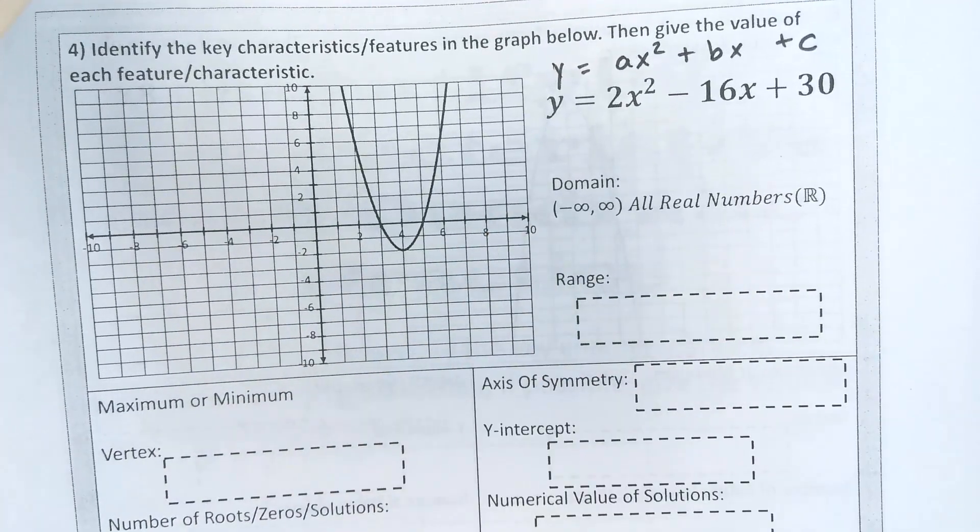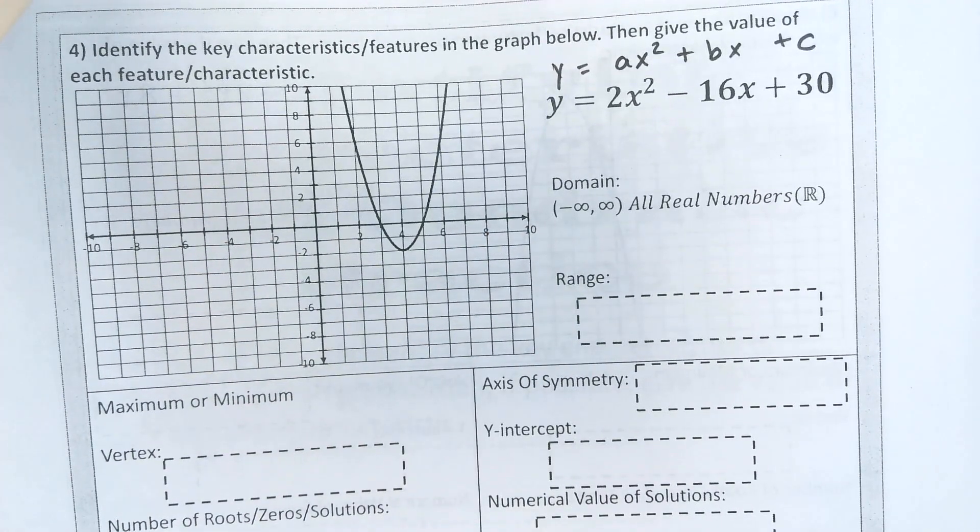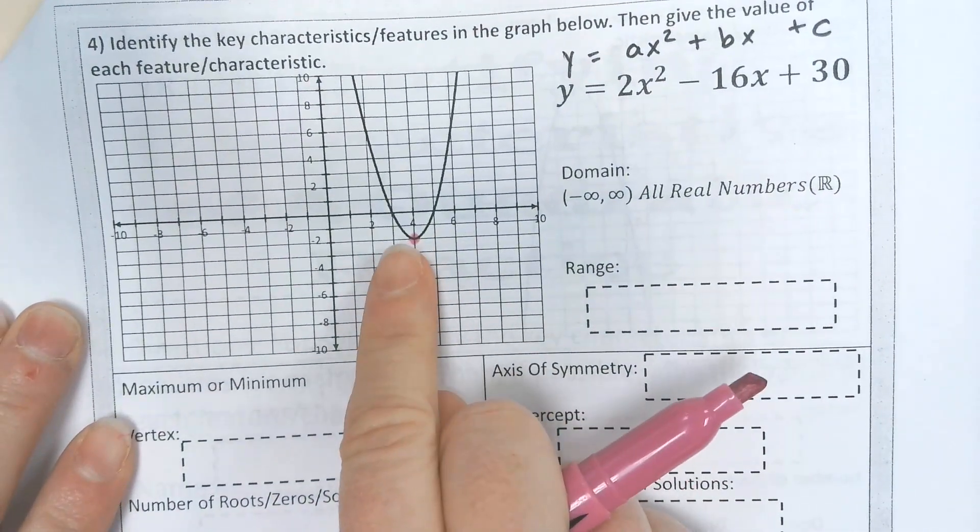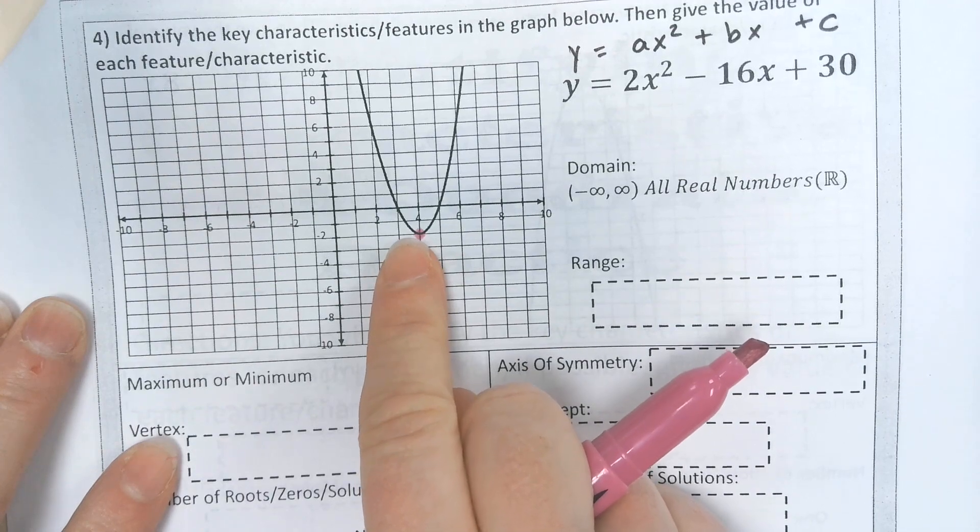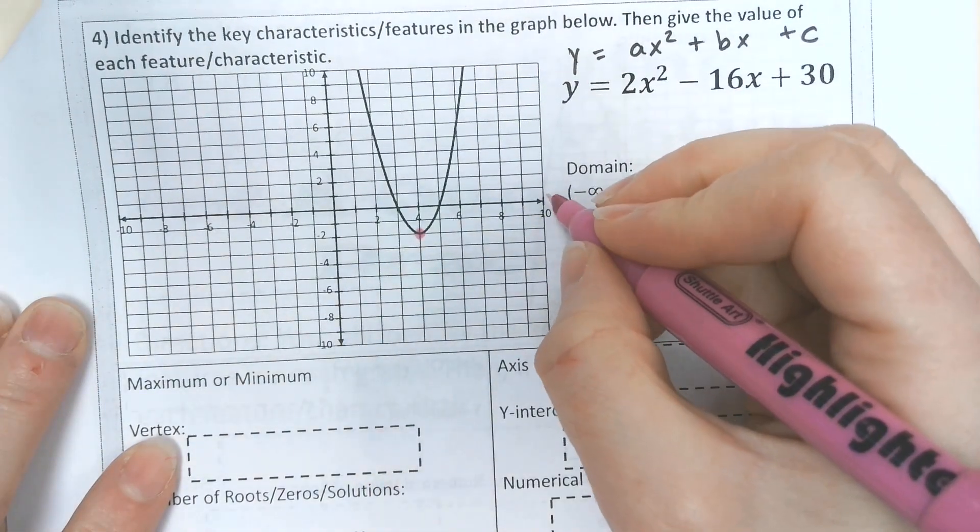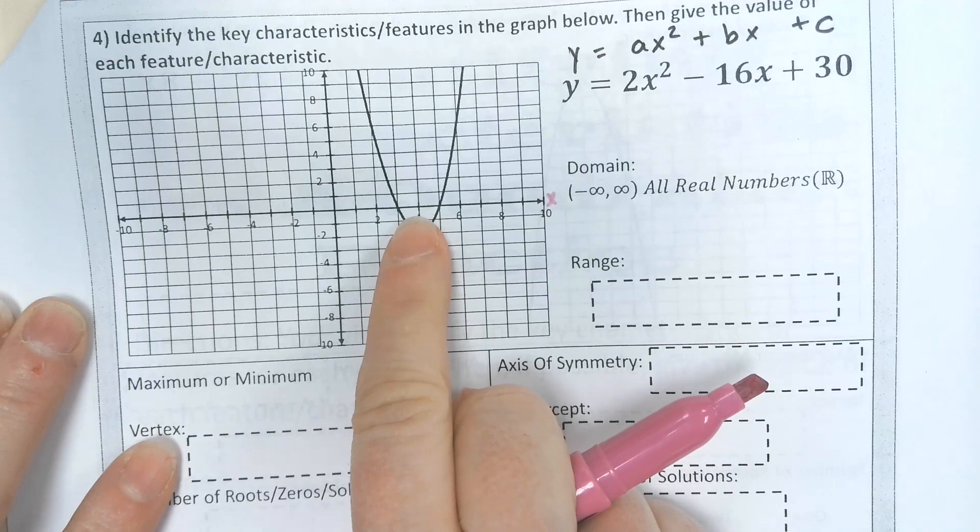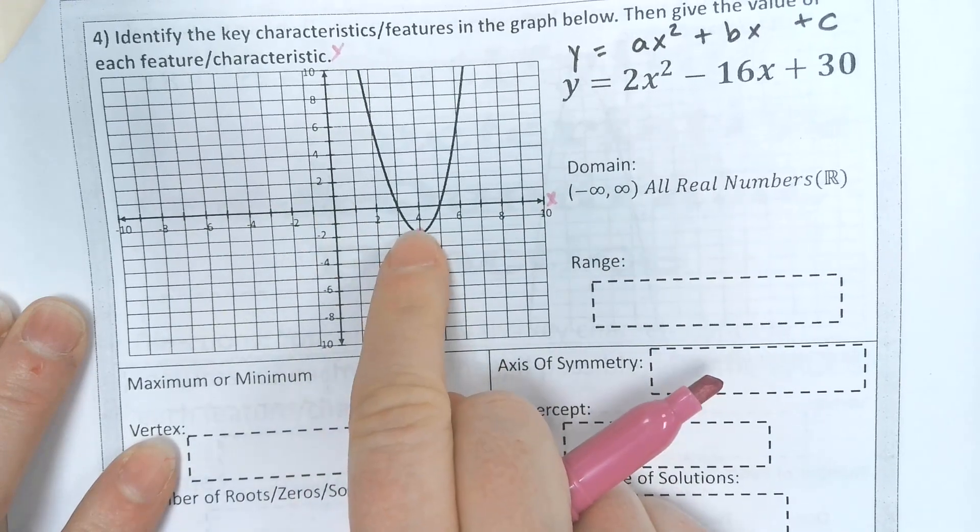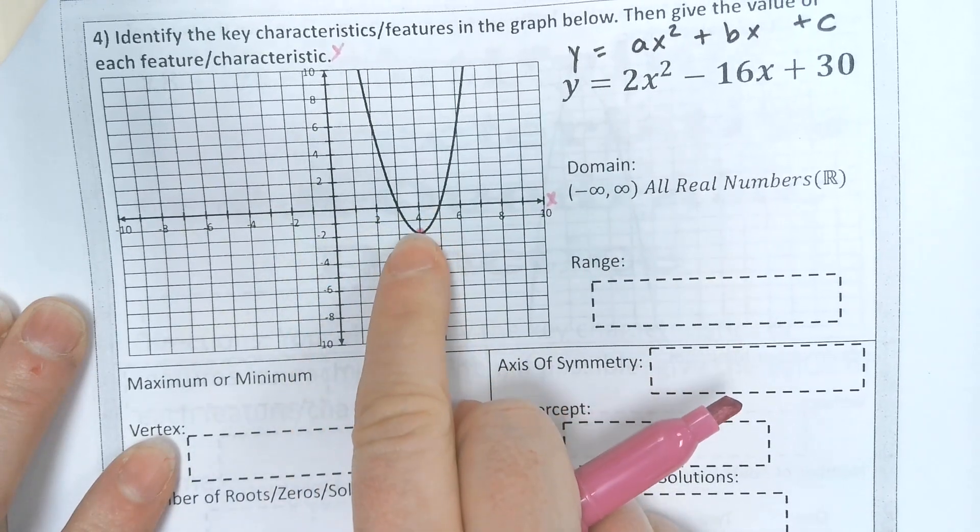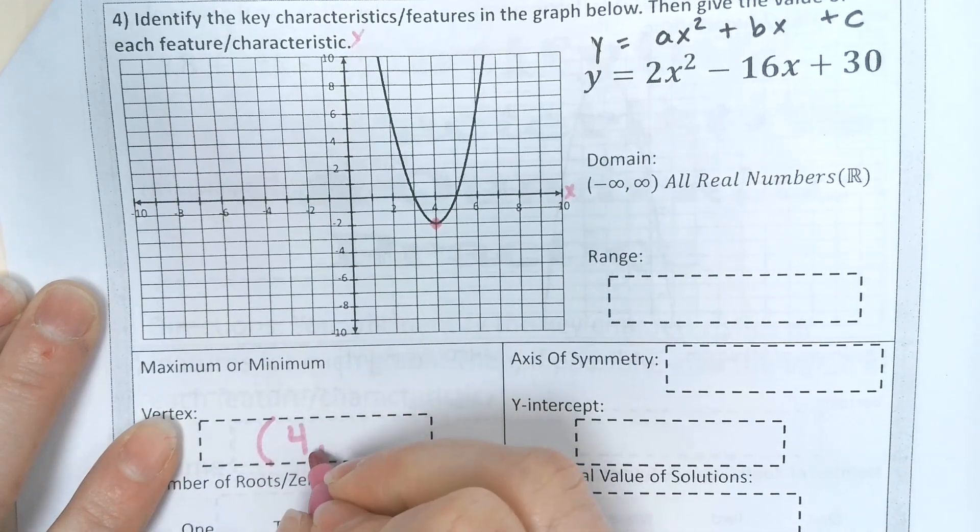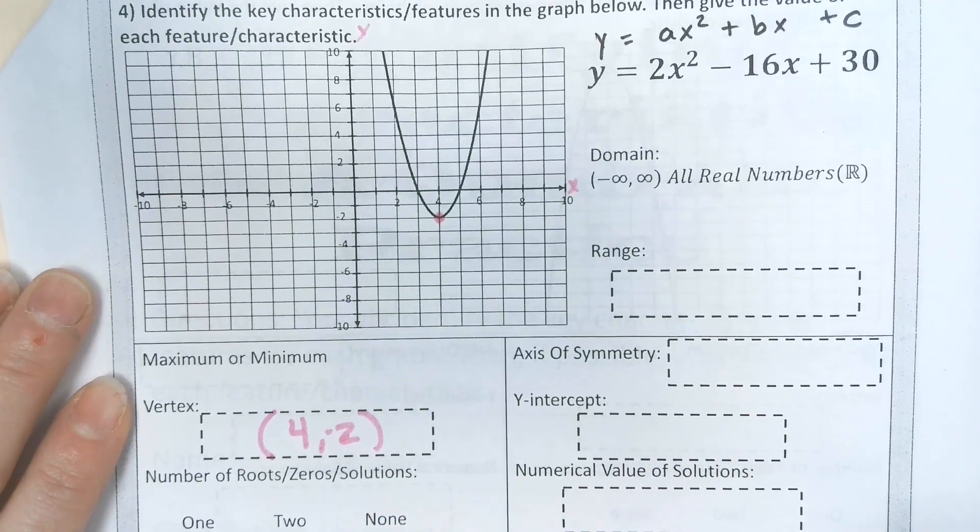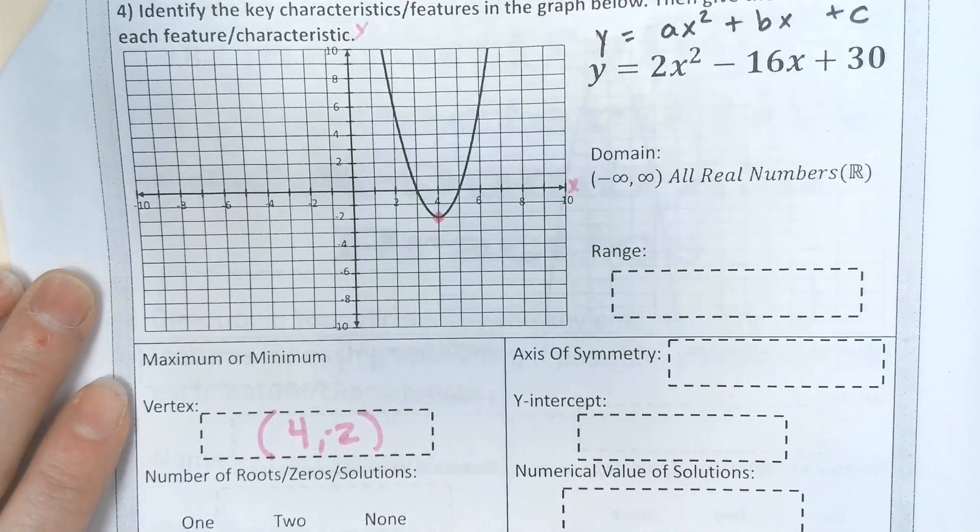If we look at our graph we're going to look at all the different things. Let's look at the vertex. Remember the vertex is the point where it changes direction. When you write your coordinate pair x, y you look at the x axis first. It matches up with 4 on the x, then you look at your y axis matches up with negative 2. So the coordinate pair here is (4, -2).